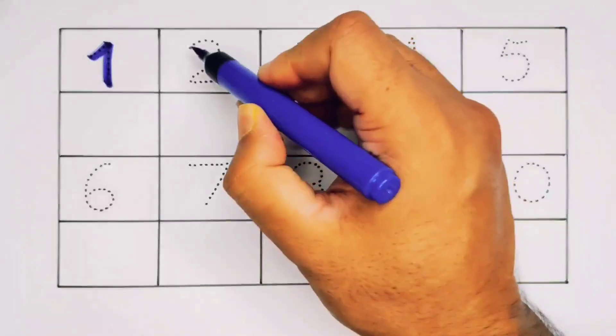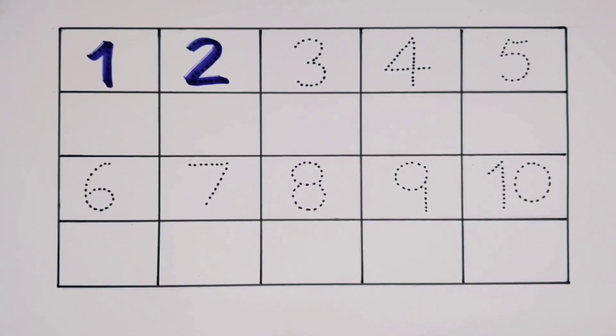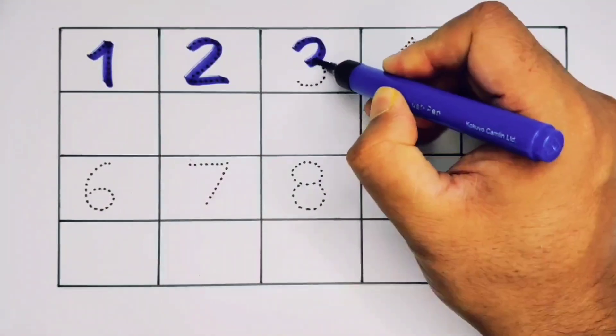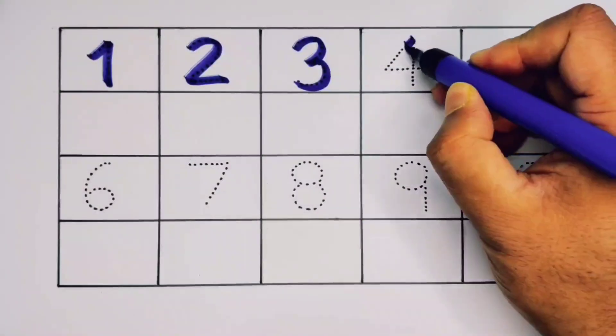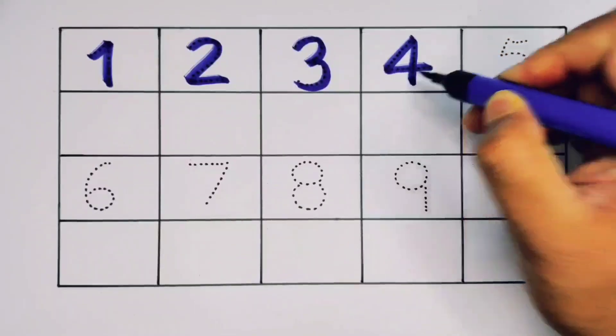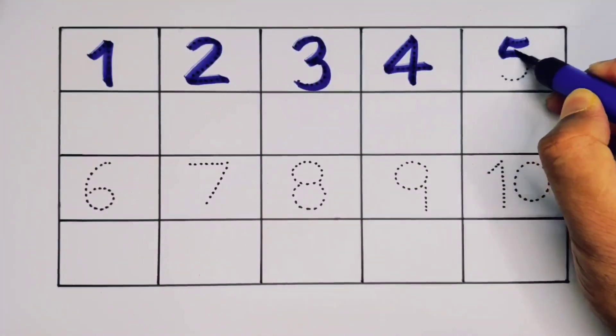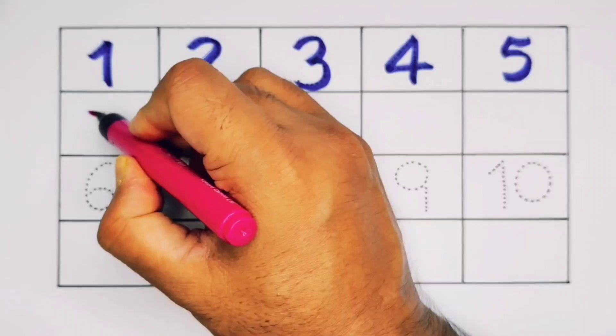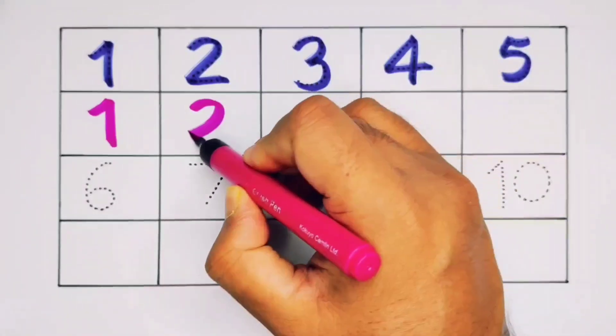Two, number two. Three, number three. Four, number four.